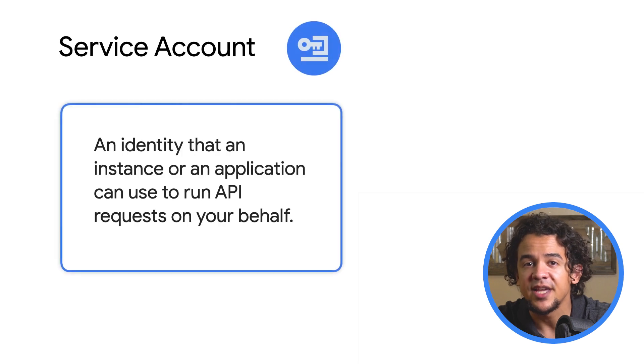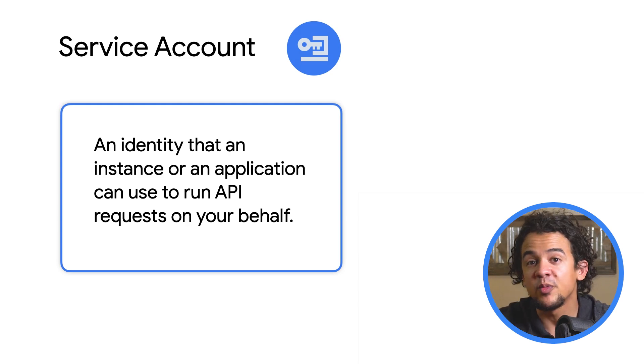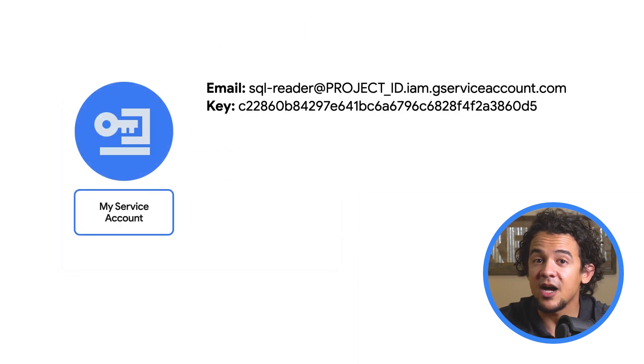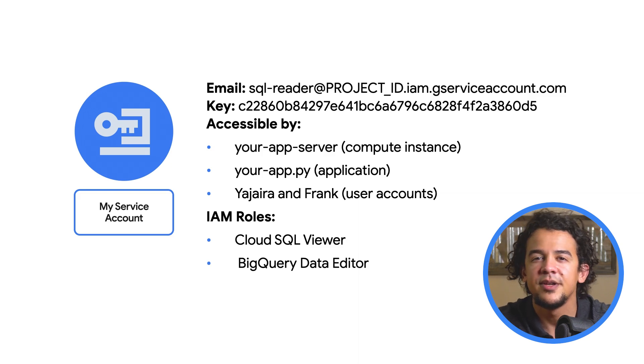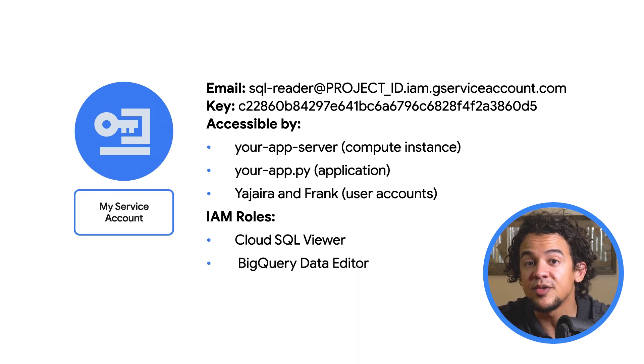A service account, on the other hand, is an identity that a compute instance or an application can use to run API requests on your behalf. There are a few major differences between a user account and a service account. Like Jahira's user account, a service account has an assigned email, but instead of a password, it can only be authenticated using a private-public RSA key pair, and it can't be logged in via a browser. Service accounts typically represent virtual machines and applications, and while user accounts should never be shared, permission can be granted to users to impersonate service accounts, allowing multiple users to access everything that a service account can access. Service accounts are granted IAM roles to perform certain actions and access certain resources in your project, just like a user account, although they're usually executing automated actions and might have multiple processes dependent on them. That means you'll need to be extra careful when you edit their access, or if you want to disable or delete them.